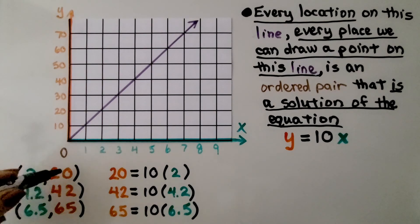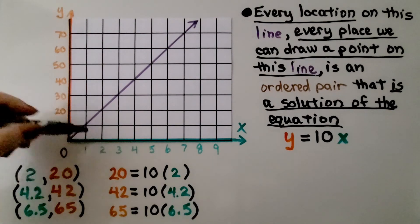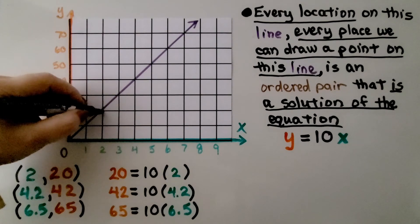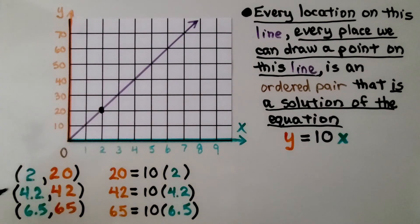If we have 2 and 20, here's 2 and here's 20. Yep, that's on the line.